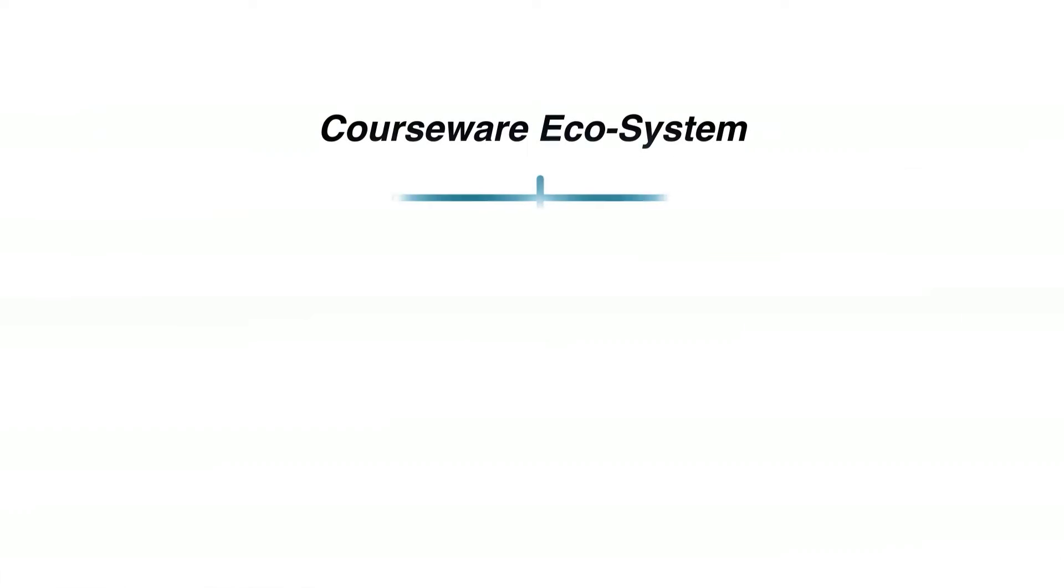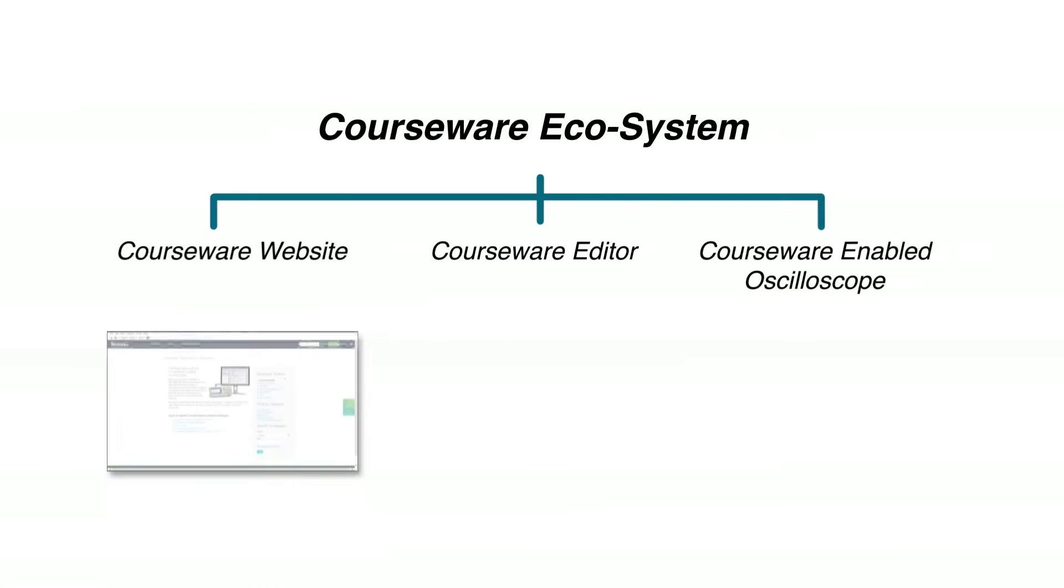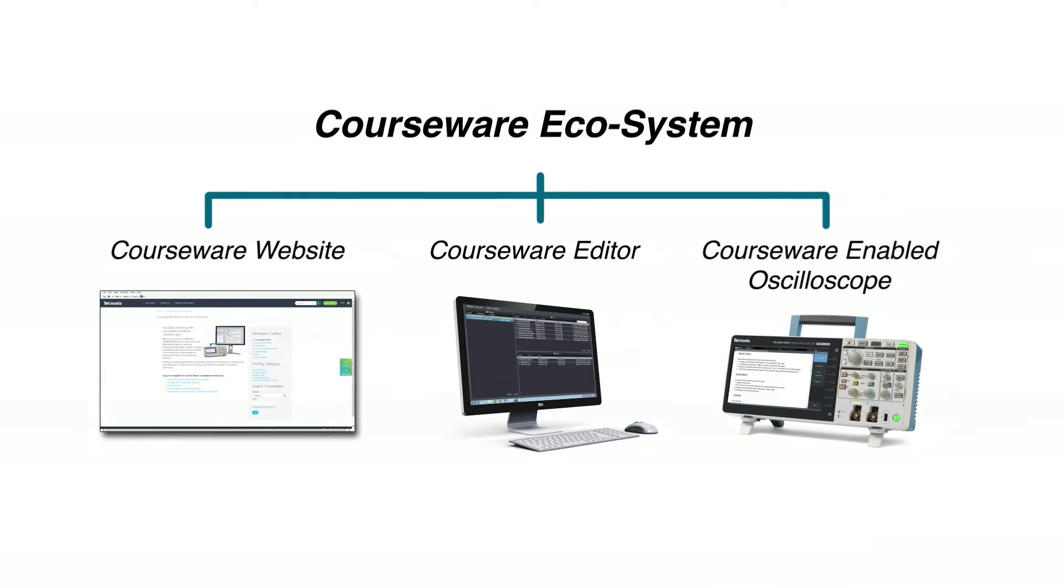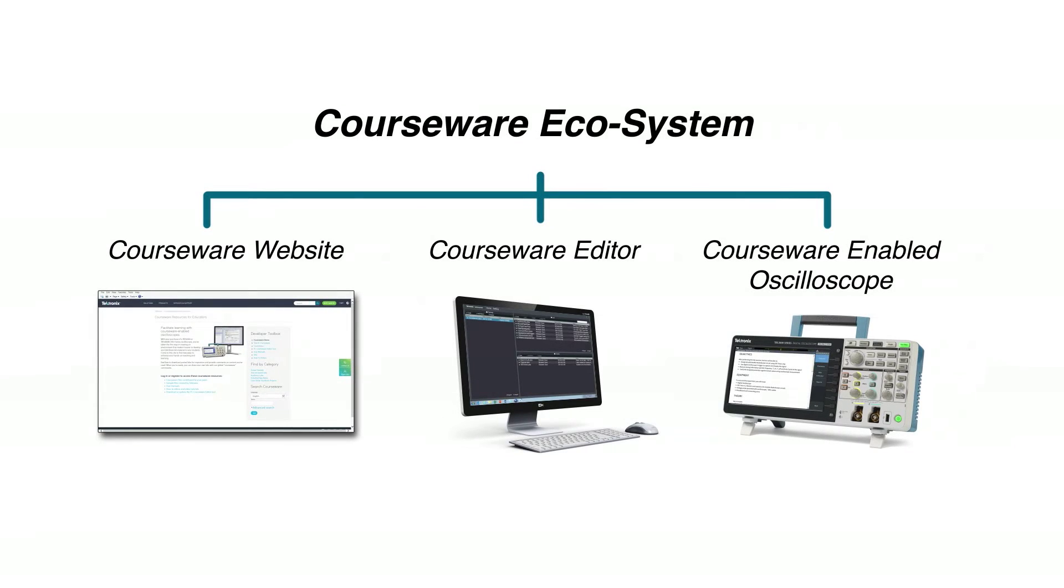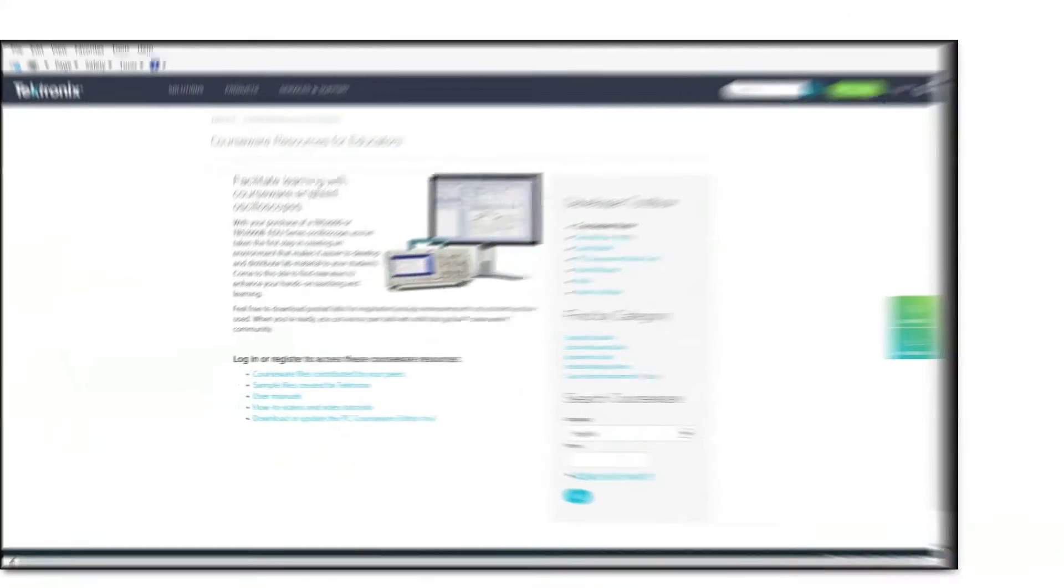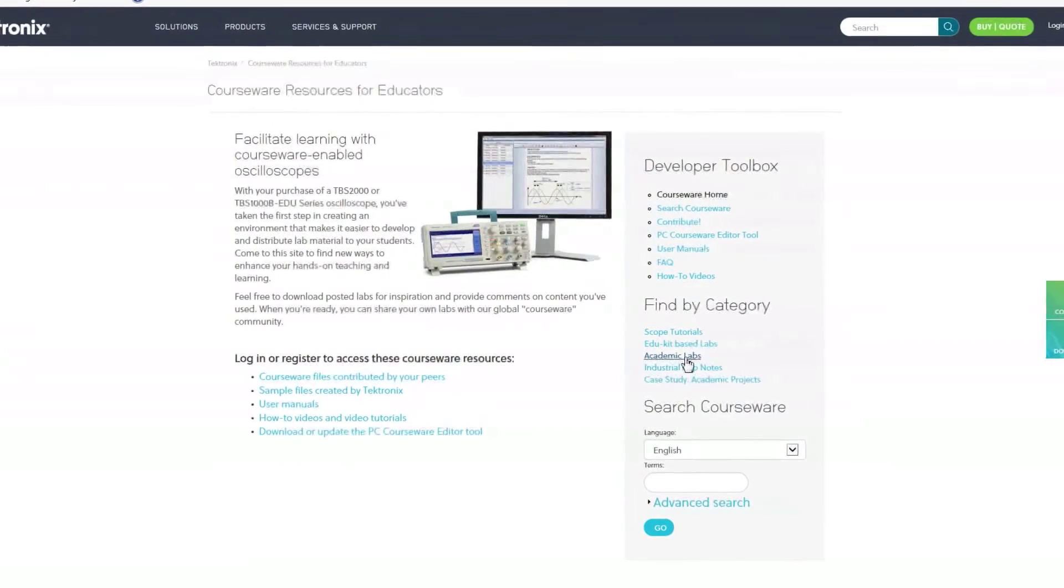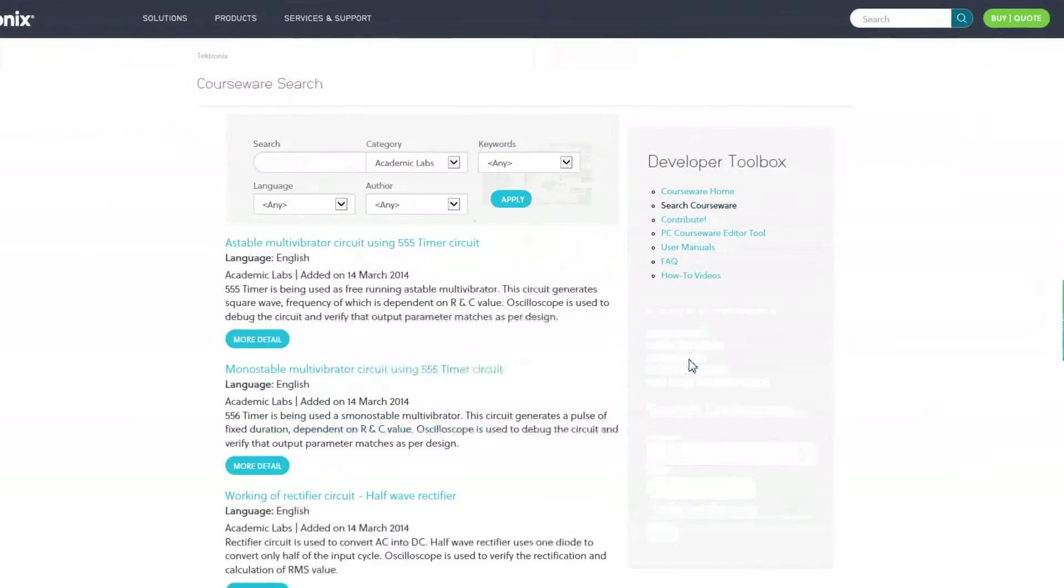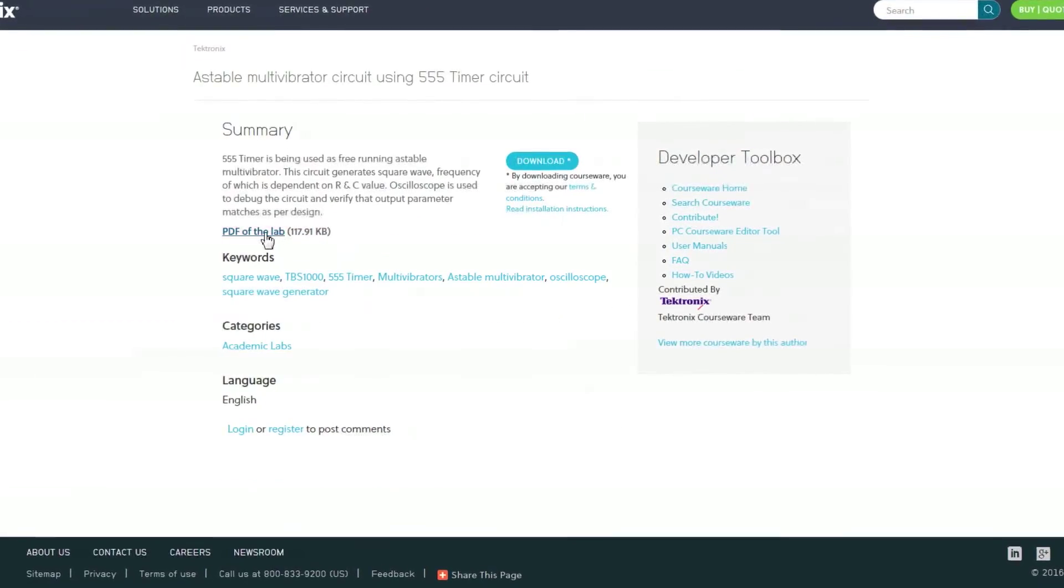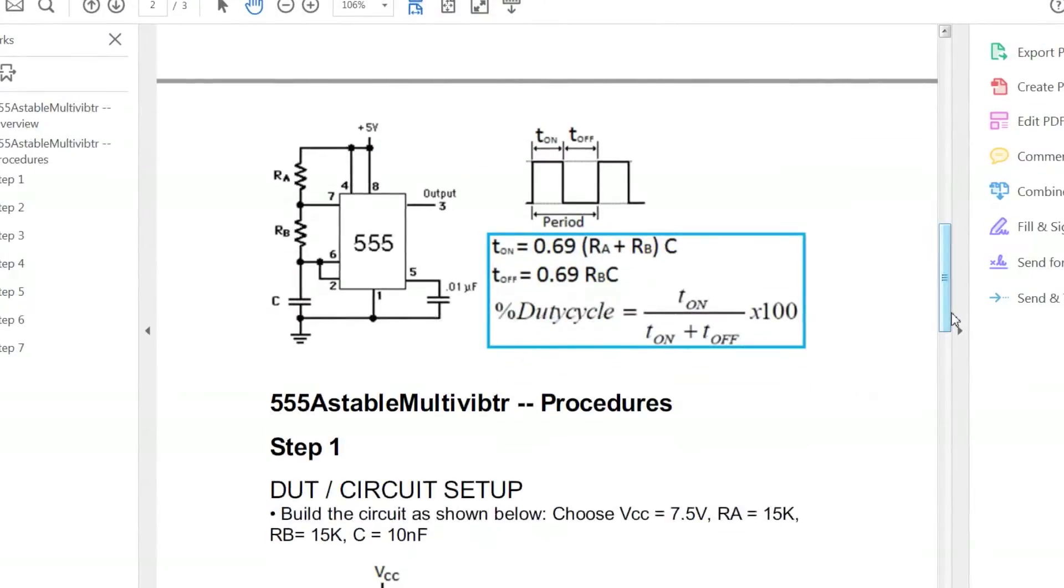The TBS 2000 is part of the three-element Tektronix courseware ecosystem, designed to help educators create and edit lab materials. The first element is the Online Courseware Resource Center, a hub for sharing lab instructions and ideas. Search for specific topics to download or upload your own lab materials to share with other educators.